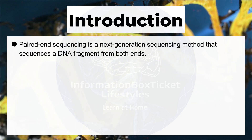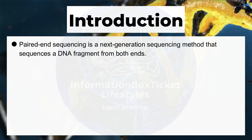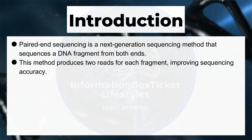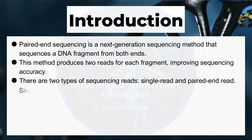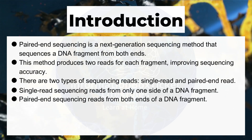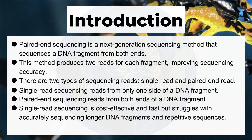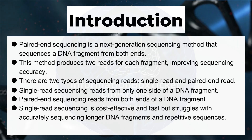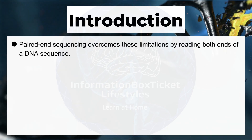Paired End Sequencing is a next-generation sequencing method that sequences a DNA fragment from both ends. This method produces two reads for each fragment, improving sequencing accuracy. There are two types of sequencing reads: single read and paired-end read. Single read sequencing reads from only one side of a DNA fragment. Single read sequencing is cost-effective and fast,